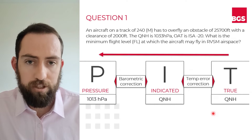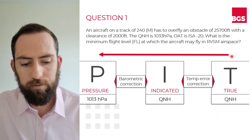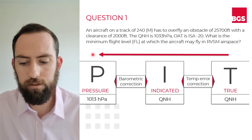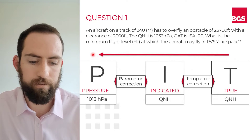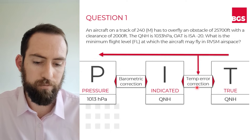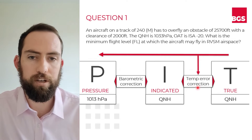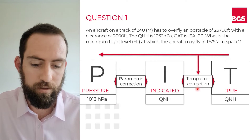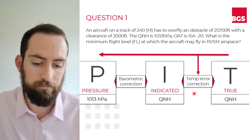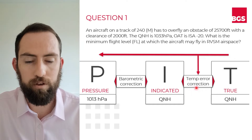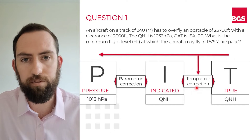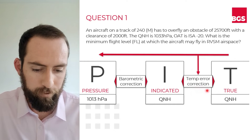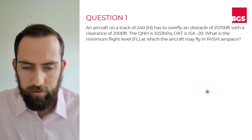As I mentioned earlier, you can work backwards from true altitude via indicated altitude to pressure altitude. But when you do this temperature error correction going backwards, you're going to have to reverse the sign — so if you get a negative figure out of that, you're going to have to add it.